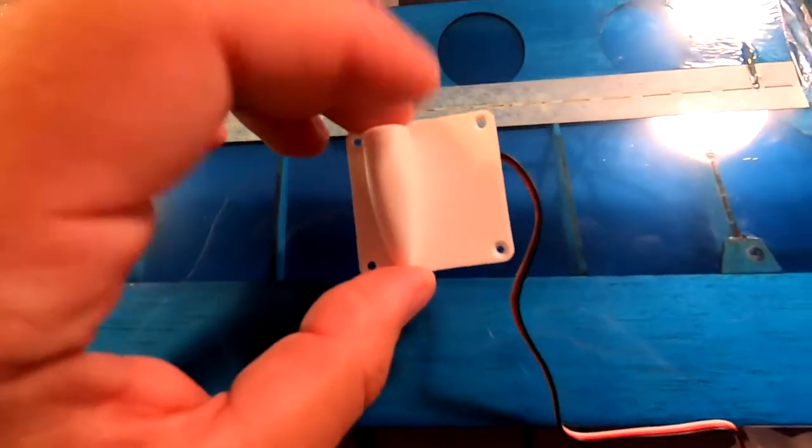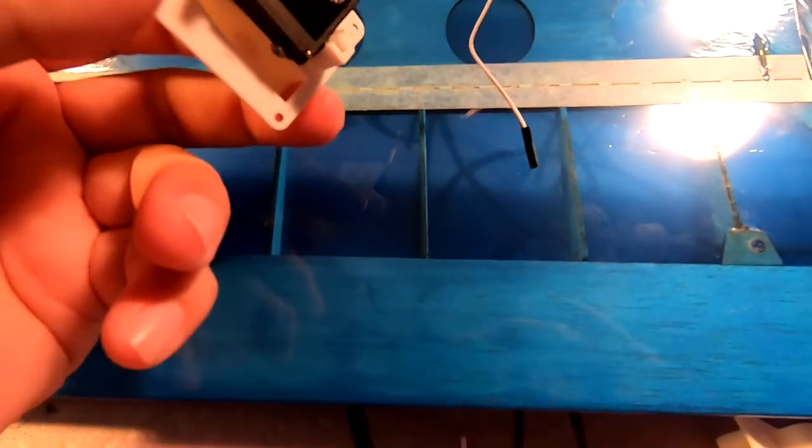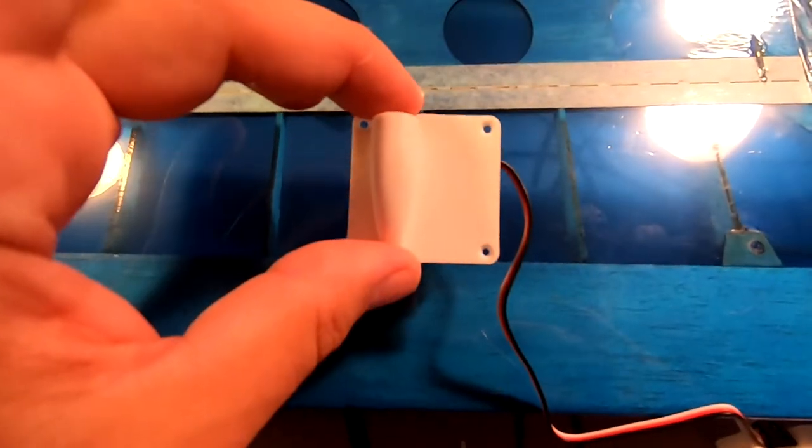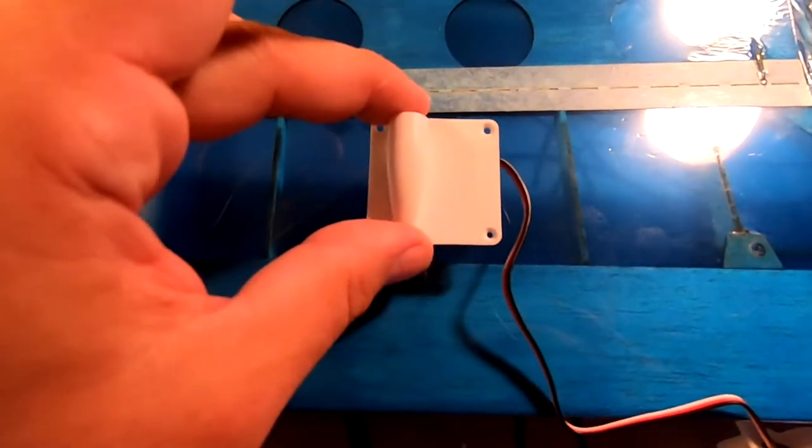Also, if there's an issue with the servo, if I need to adjust the horn, I can unscrew this and remove it from the wing and do whatever I need to do and then screw it back in.